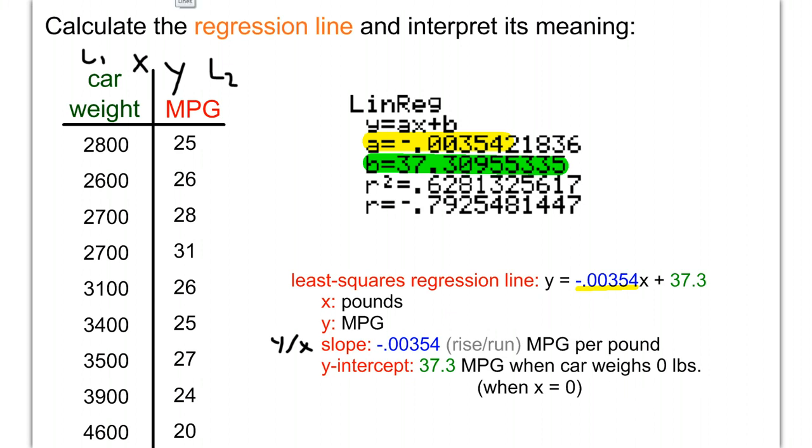One thing to watch out for: in many problems, the y-intercept doesn't make sense. Why would a car weigh zero pounds? You wouldn't. This number helps correct things in the range we're given. We'll talk about extrapolation later and why it can be a problem. Many times the y-intercept is an example of extrapolation, which is why it doesn't make much sense. But that's what it refers to: if your car weighed nothing, you'd get 37.3 MPG.